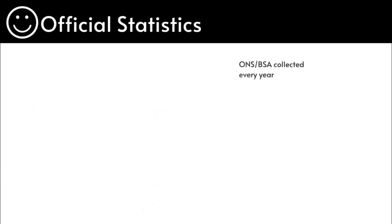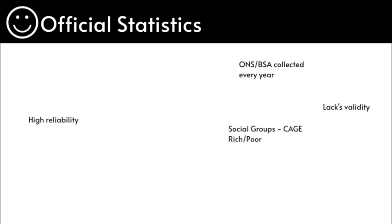Official statistics — OMS and BSA collect them every single year. They lack validity; you can't tell attitudes, behaviour, or reasoning why, as interpretivists argue. But there seems to be high reliability because you can form correlations, trends and patterns, which positivists really like. Social groups — CAGE: class, age, gender, ethnicity — are some things which you cannot fully see within official statistics.